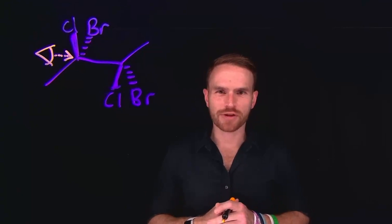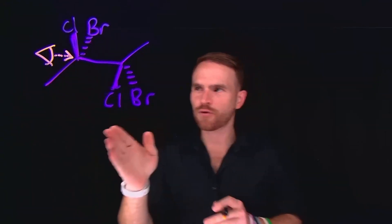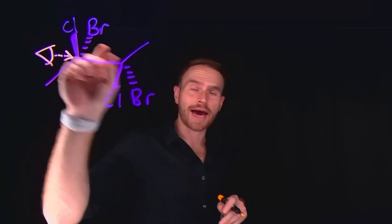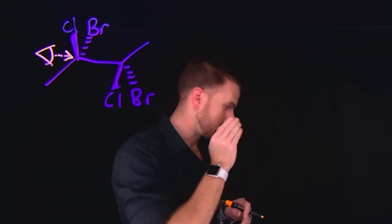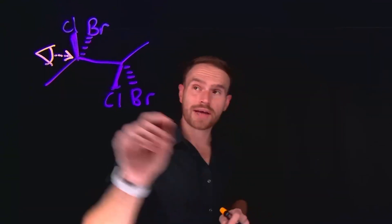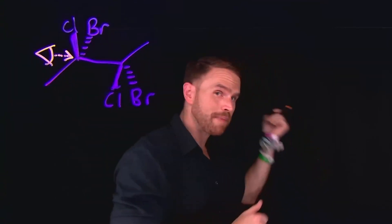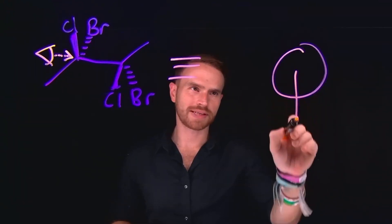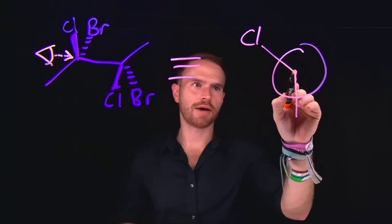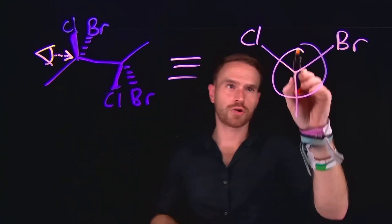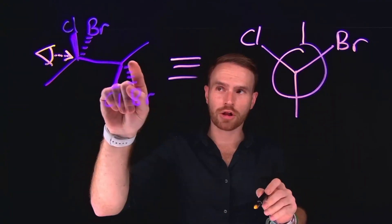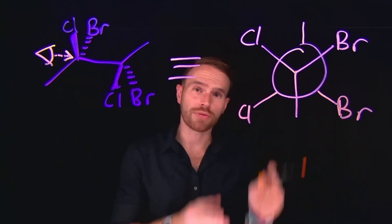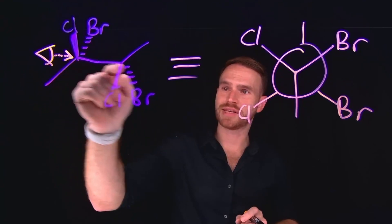When drawing the Newman projection for this molecule, our vantage point is looking down this carbon-carbon bond. Since the chlorine atom is coming out at you — drawn as a wedge — when looking down this direction, it goes up and to the left. The bromine atom, drawn with a dash going back into the screen, should go up and to the right. We begin at the front of the molecule with our methyl group coming down, chlorine going up and to the left, and bromine going up and to the right. The back of the molecule has a methyl group going up, chlorine going down-left, and bromine going down-right.